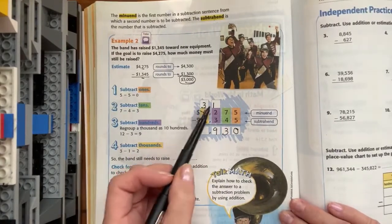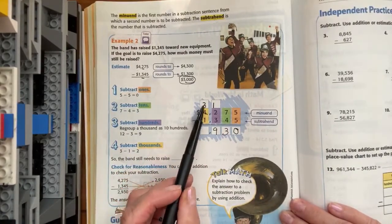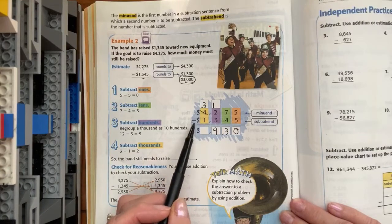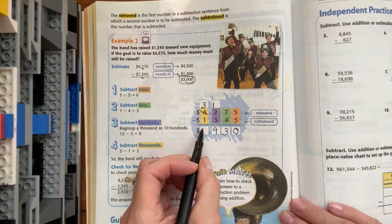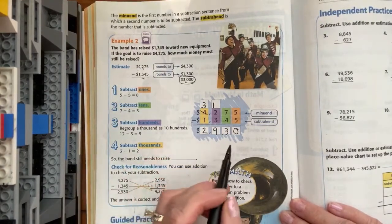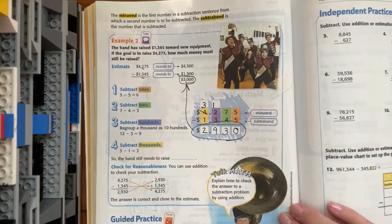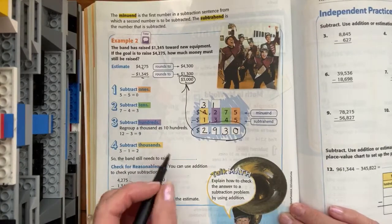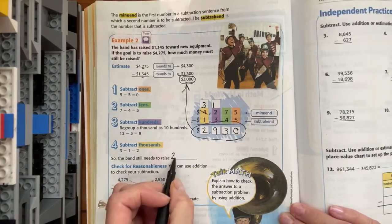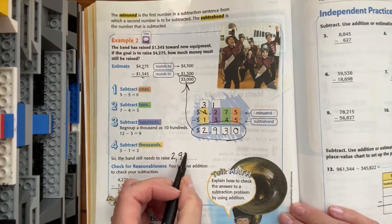And lastly, we work in the thousands, and we have three thousand minus one thousand leaves us with about two thousand. So take a look at that. Does that turn out pretty close to our estimate? It does. So the band still needs to raise two thousand nine hundred and thirty dollars.